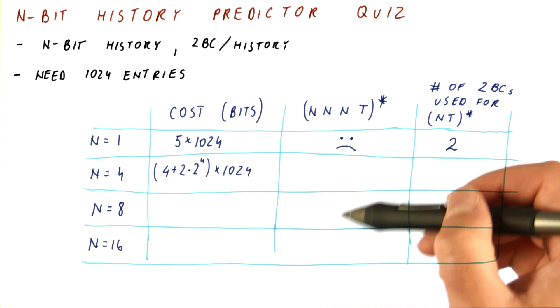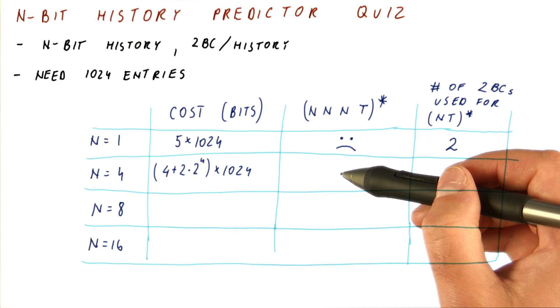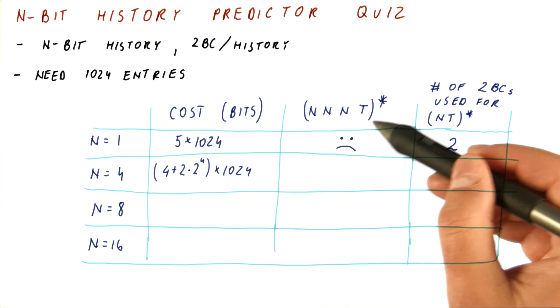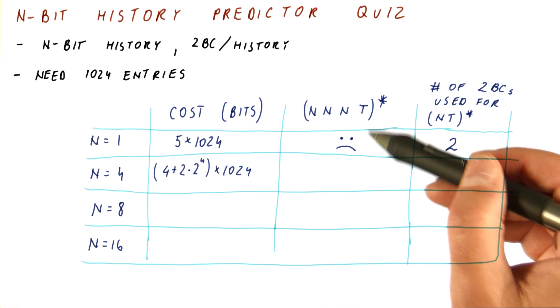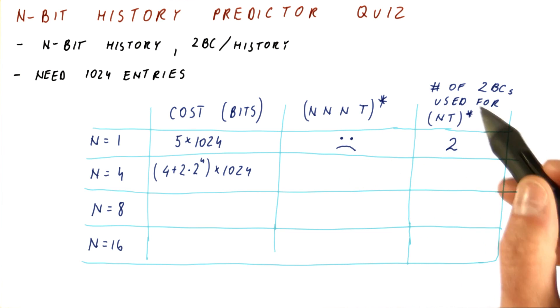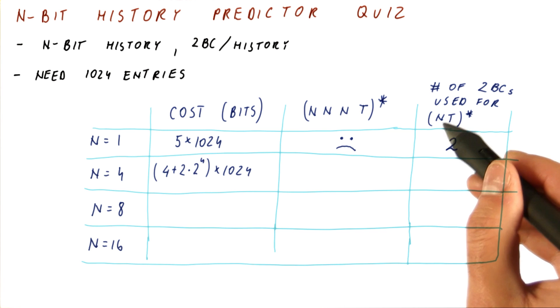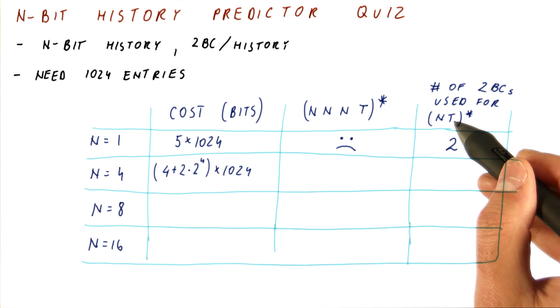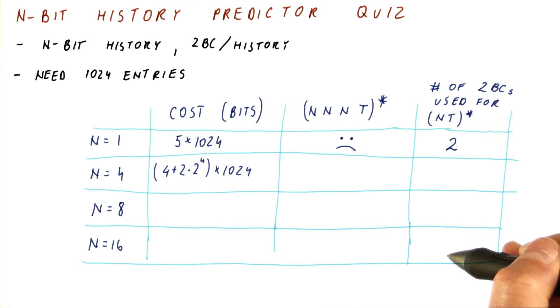Here, you should just say yes or no. Yes if the predictor will predict this successfully after the initial warm-up period, no if it won't. And then how many two-bit counters are we using for the not taken, taken, not taken, taken pattern in this particular predictor?